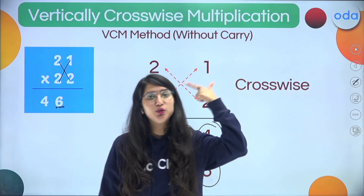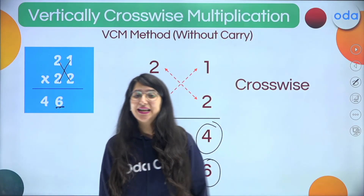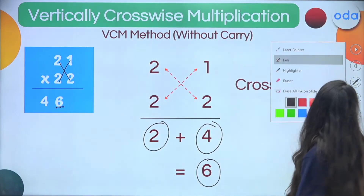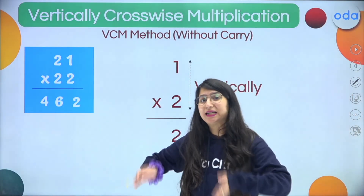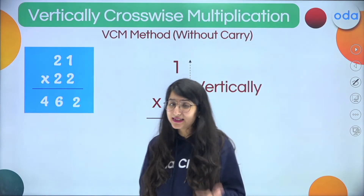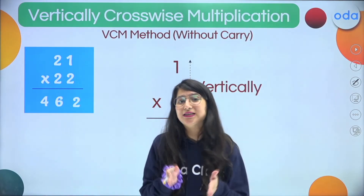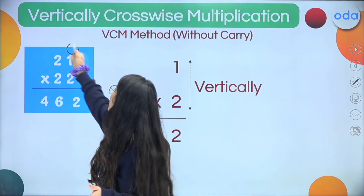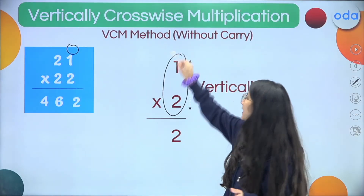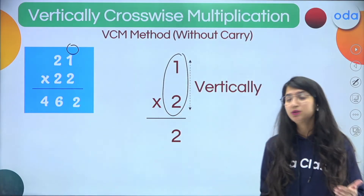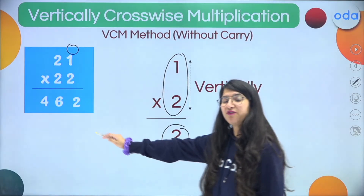Steps one and two are done. Now step three is Vertical again, but this time on the ones place: 2 × 1 = 2. So the third digit of our answer is 2. Our answer is 462, done in very little time.